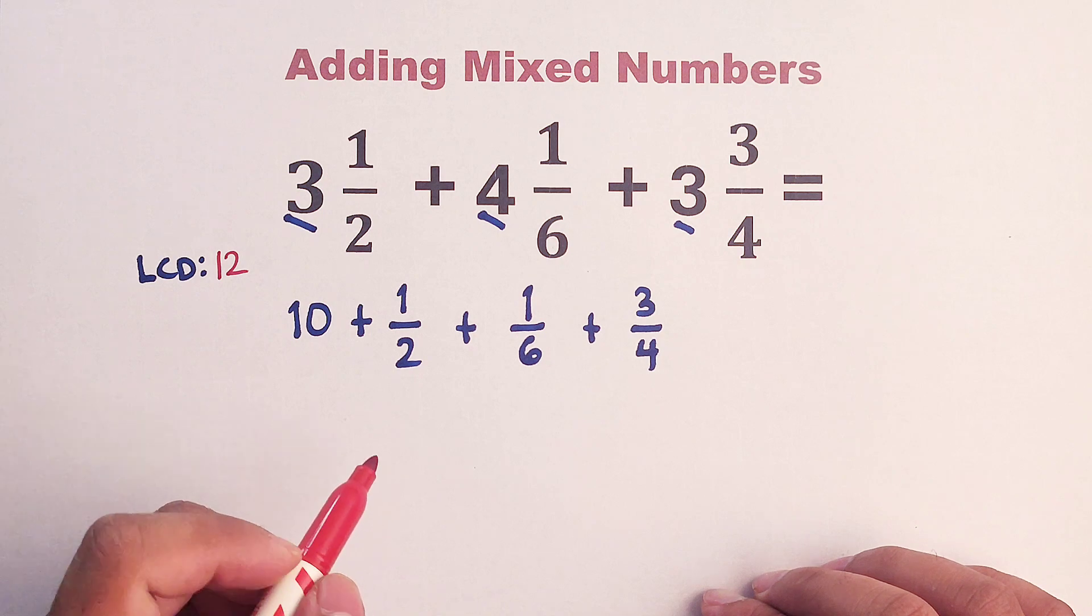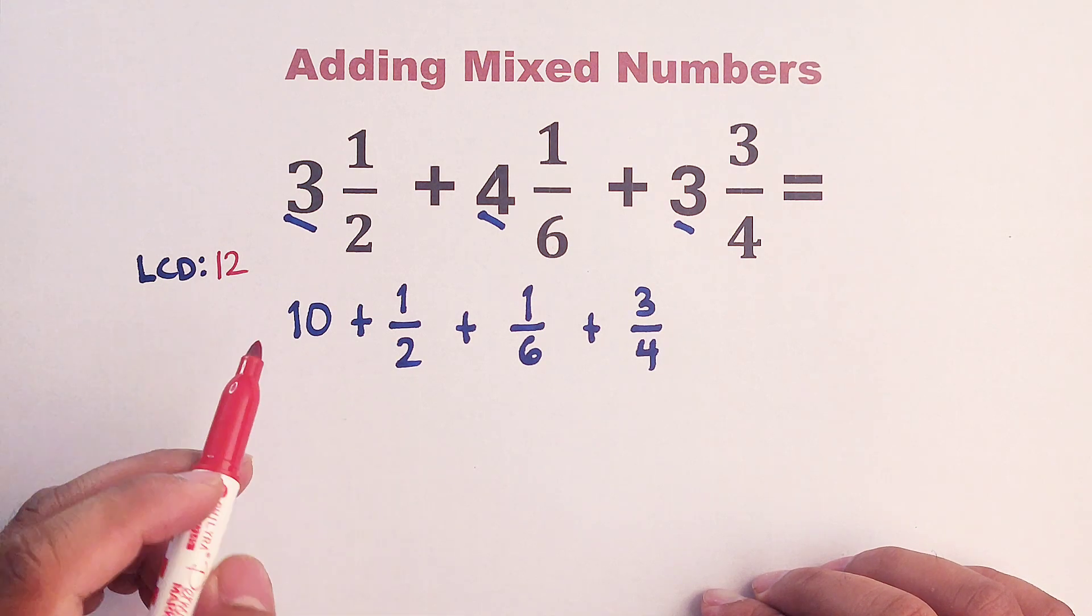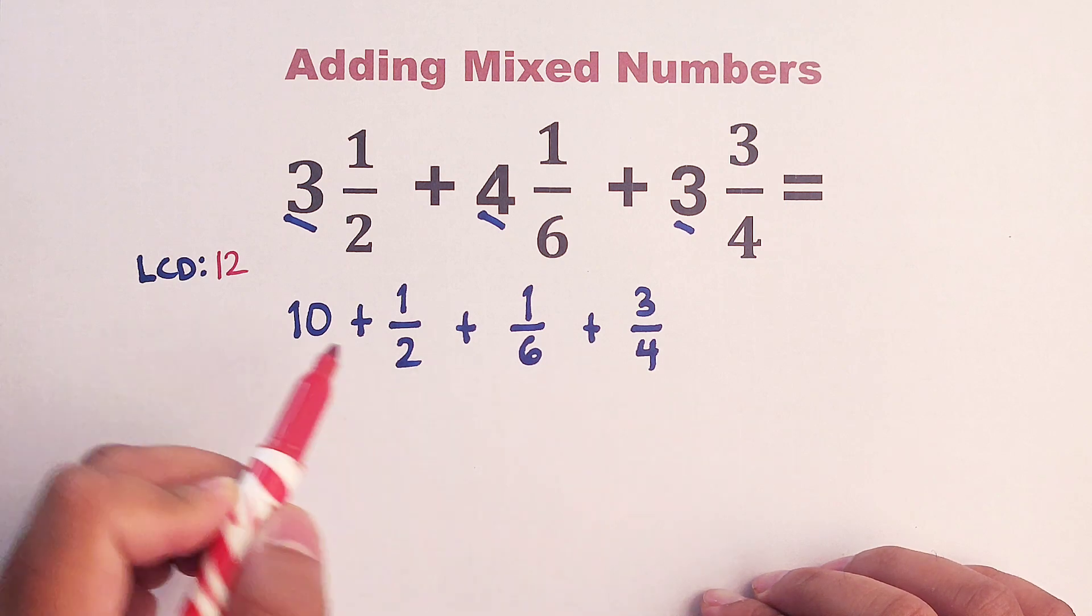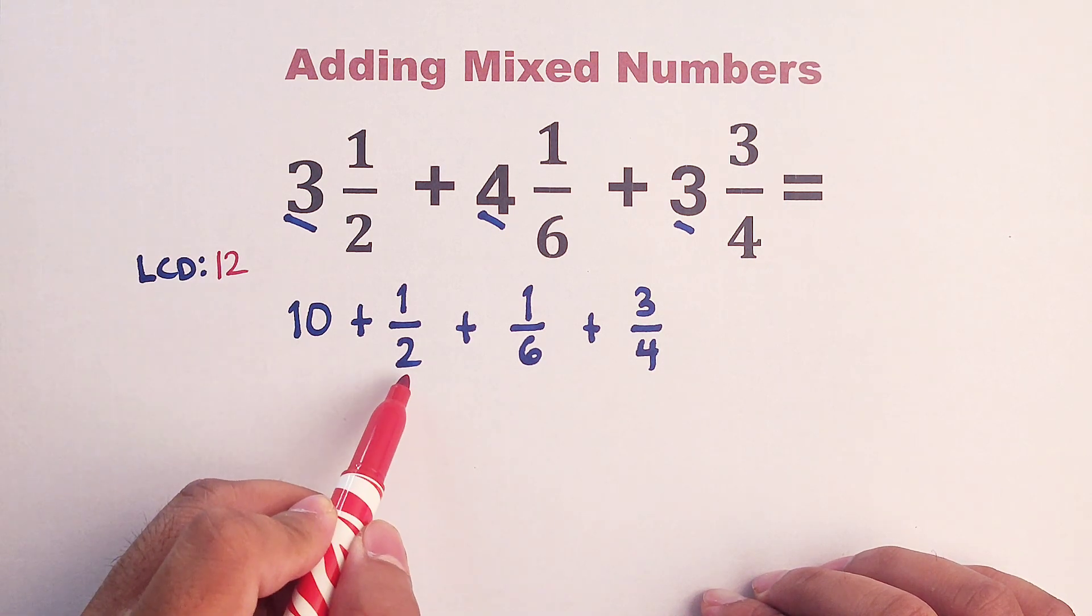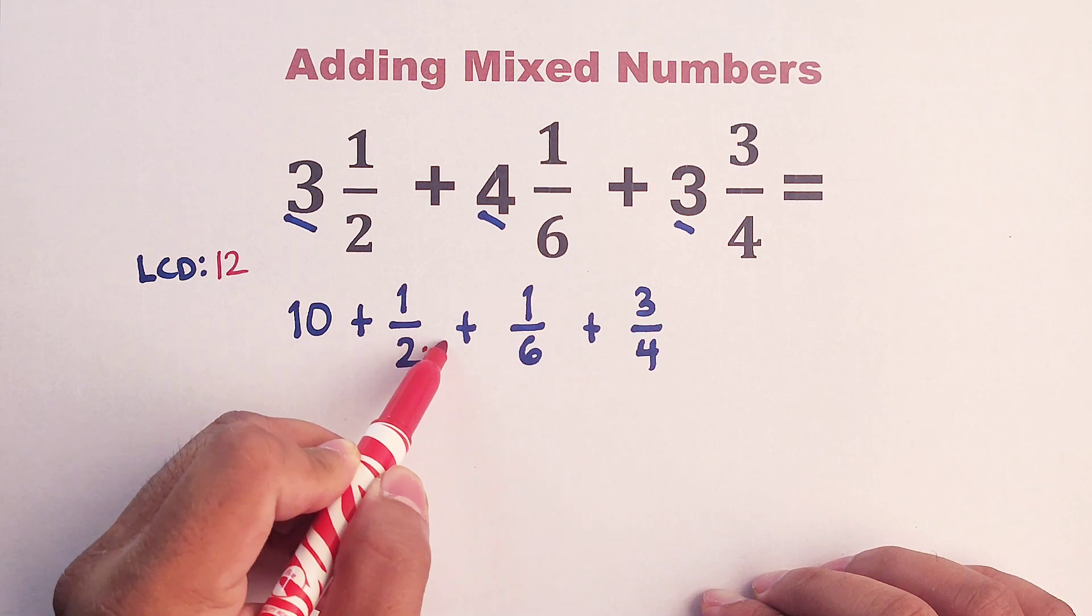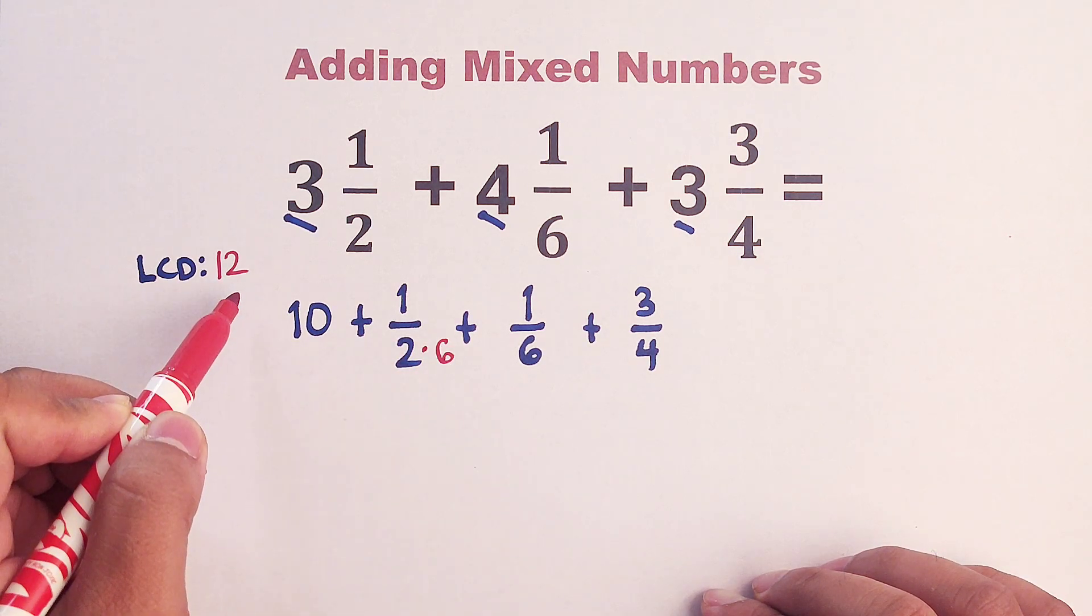Now, this time, we will think of the numbers that we need to multiply to two, six, and four to make these numbers equal to 12. Example here, for two, we need to multiply this by six. Because two times six, that is 12.